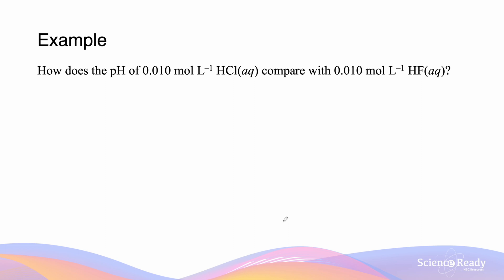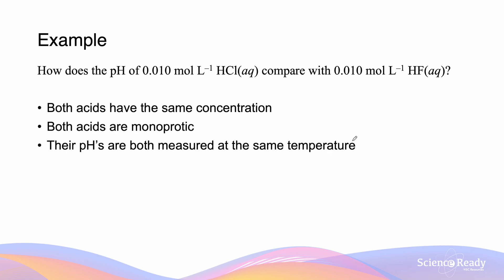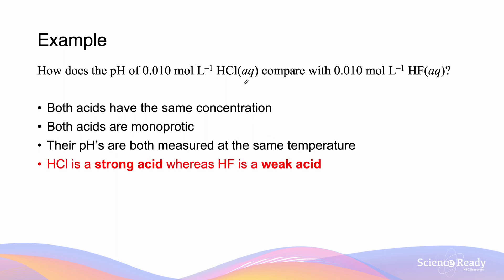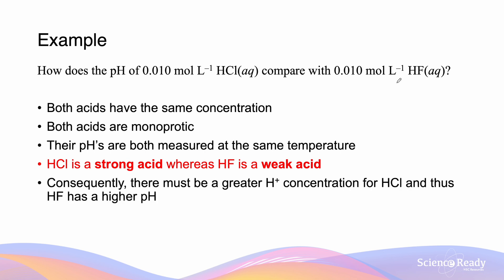How does the pH of a 0.010 mole per liter solution of HCl compare with that of a 0.010 mole per liter solution of HF? Both acids have the same concentration, both are monoprotic, and we assume both pHs are measured at the same temperature. However, HCl is a strong acid meaning it fully deprotonates, and HF is a weak acid meaning it does not fully deprotonate. Therefore there must be a higher H⁺ concentration for HCl than for HF, and thus HF is going to have a higher pH than HCl.